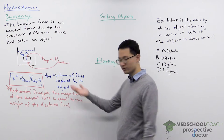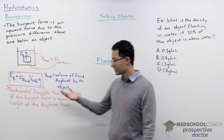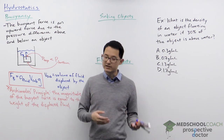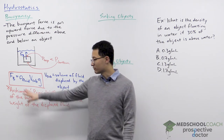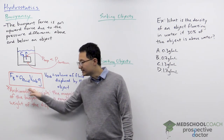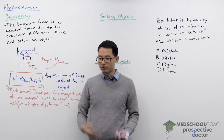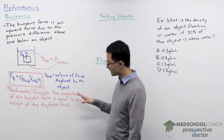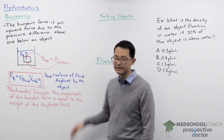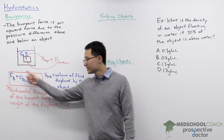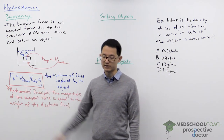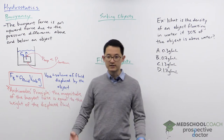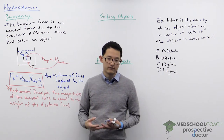This equation should look familiar. The weight of an object is F_g = mg, but with fluids we substitute mass for density times volume, giving us density times volume times gravity — which is also the equation for weight. This is Archimedes' principle: the magnitude of the buoyant force equals the weight of the displaced fluid. From this, the greater the volume of fluid displaced or the greater the density of the fluid, the greater the buoyant force.